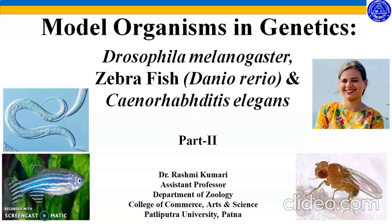In this video, I will be talking about the second model organism, that is zebrafish or Danio rerio. This is one of the most common and preferred organisms used in different genetic experiments as a model. Apart from genetics, they are also used in other fields of research as well.